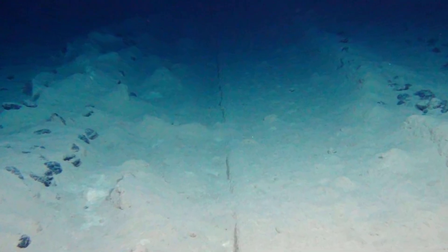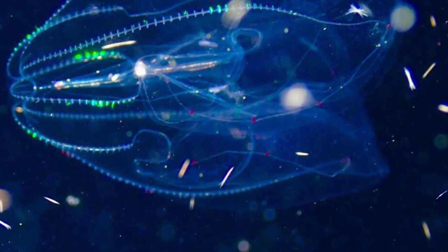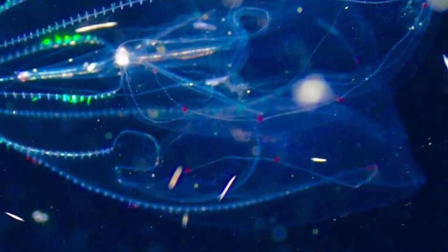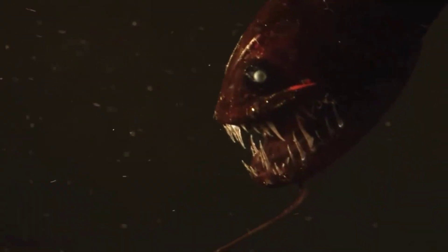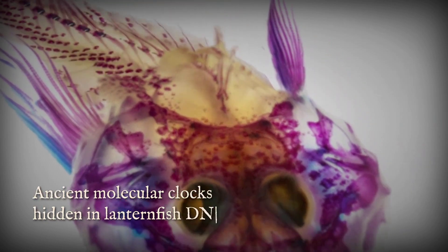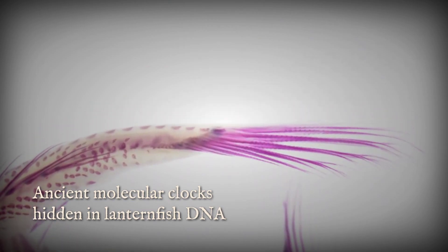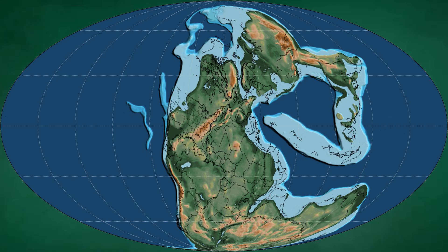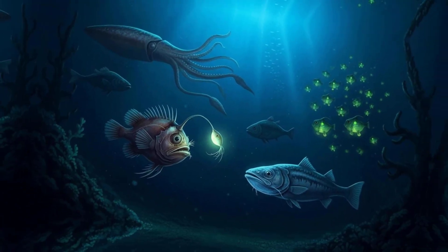Yet the fossil record offers almost nothing. These creatures are built of soft tissue, their light organs vanishing into mud and silt long before bone or shell could preserve a trace. What remains is a puzzle reconstructed from genetic blueprints and the living signals pulsing in darkness. Molecular clocks, ticking inside the DNA of lanternfish, dragonfish and comb jellies, trace the origins of glowing proteins back to a time when continents were still drifting apart.